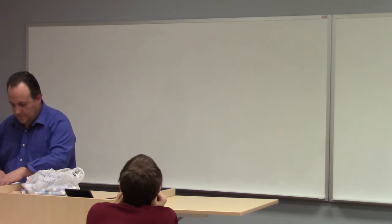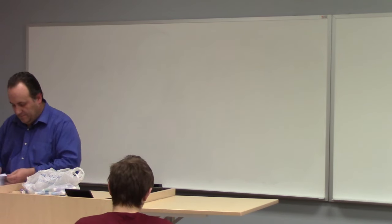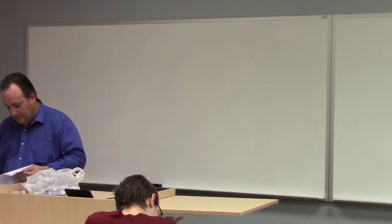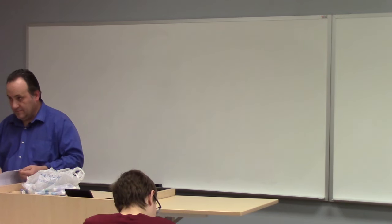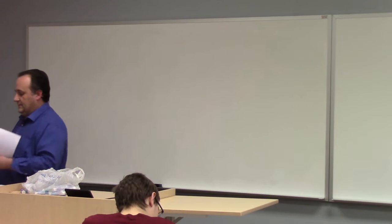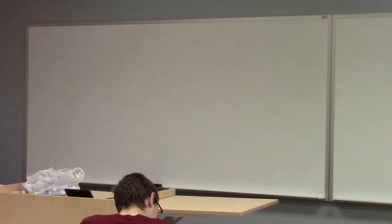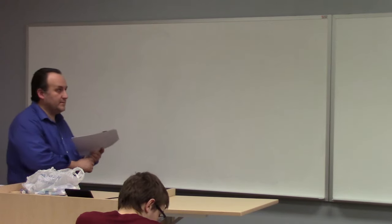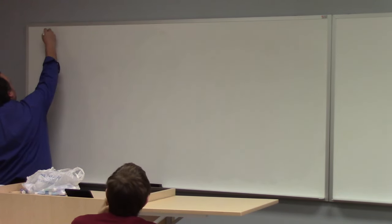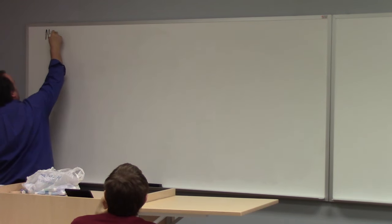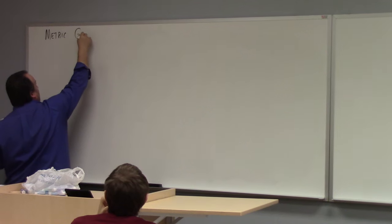Let me begin with the definition of a geometry. A geometry is a real vector space paired with a metric G. So today we're going to talk about metrics, or real metric geometry, I guess you could say, is what we're talking about.